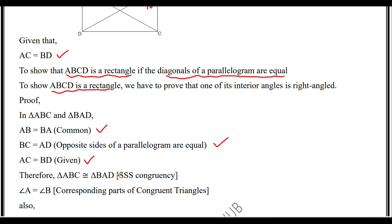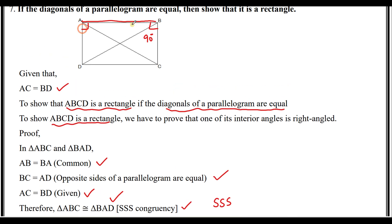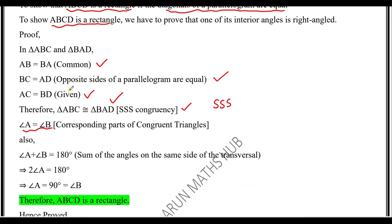Since three sides are equal, we use the SSS congruency criterion — two triangles are congruent if their corresponding sides are equal. By SSS, triangle ABC is congruent to triangle BAD. In congruent triangles, corresponding angles are equal. Therefore, by CPCT, angle A equals angle B.